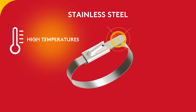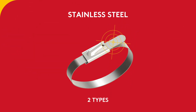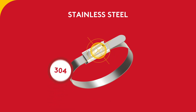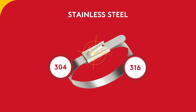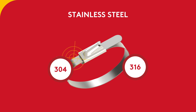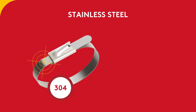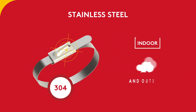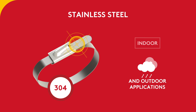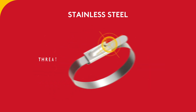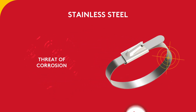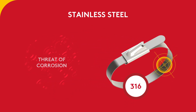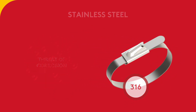There are two types of stainless steel used in this range: 304 and 316. Type 304 is used for general purposes with both indoor and outdoor applications. When corrosion is a threat, it's type 316 you need.